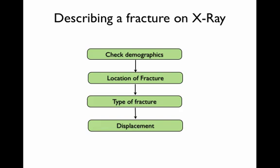A basic format for describing a fracture on x-ray is to start with the patient demographics and confirm you're looking at the correct film at the right time. Then we'll talk about the location of the fracture, including the bone, site, and side. Then we'll talk about the type of fracture before finally describing any displacement which may have occurred.